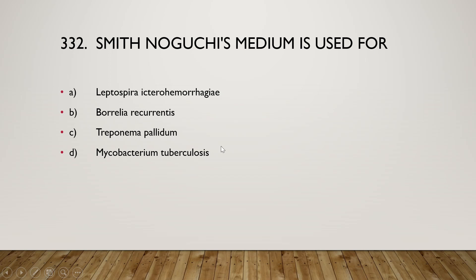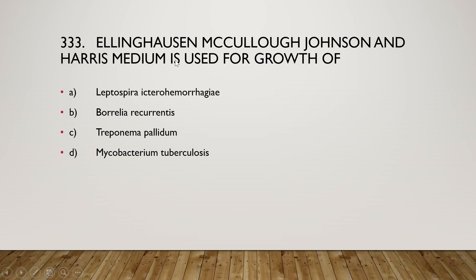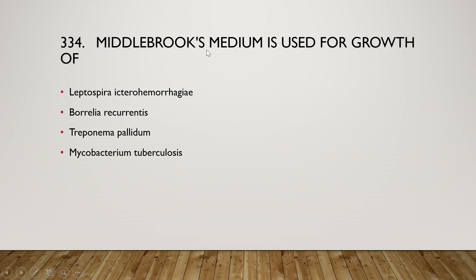Smith-Noguchi's medium is used for Leptospira icterohaemorrhagiae, Borrelia recurrentis, Treponema pallidum, or Mycobacterium tuberculosis? The right answer is option B, Borrelia recurrentis. The Ellinghausen-McCullough-Johnson-Harris (EMJH) medium is used for Leptospira icterohaemorrhagiae — this medium is also known as EMJH medium. Middlebrook medium is used for Mycobacterium tuberculosis.